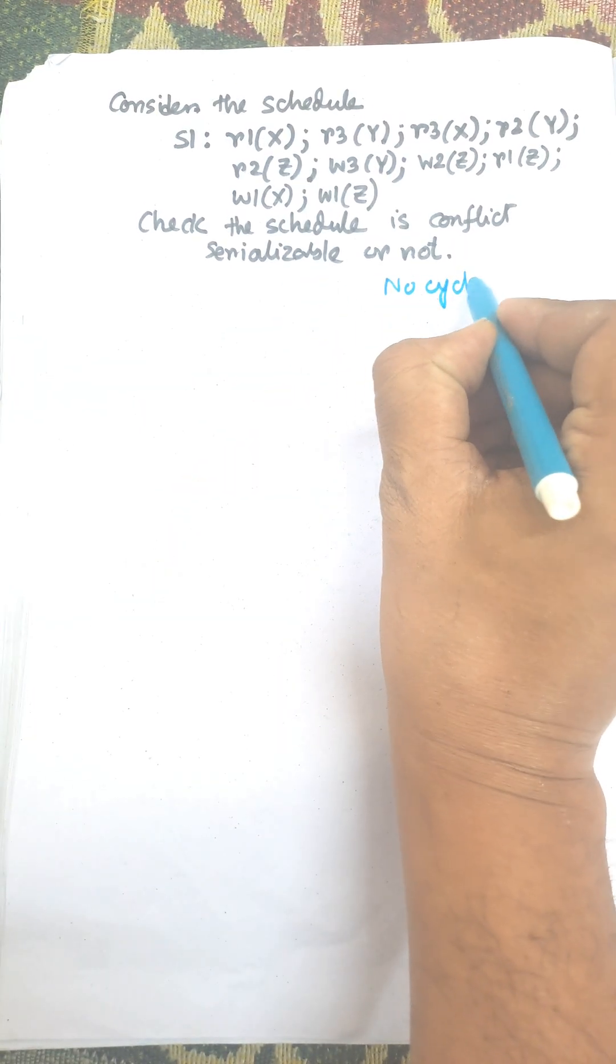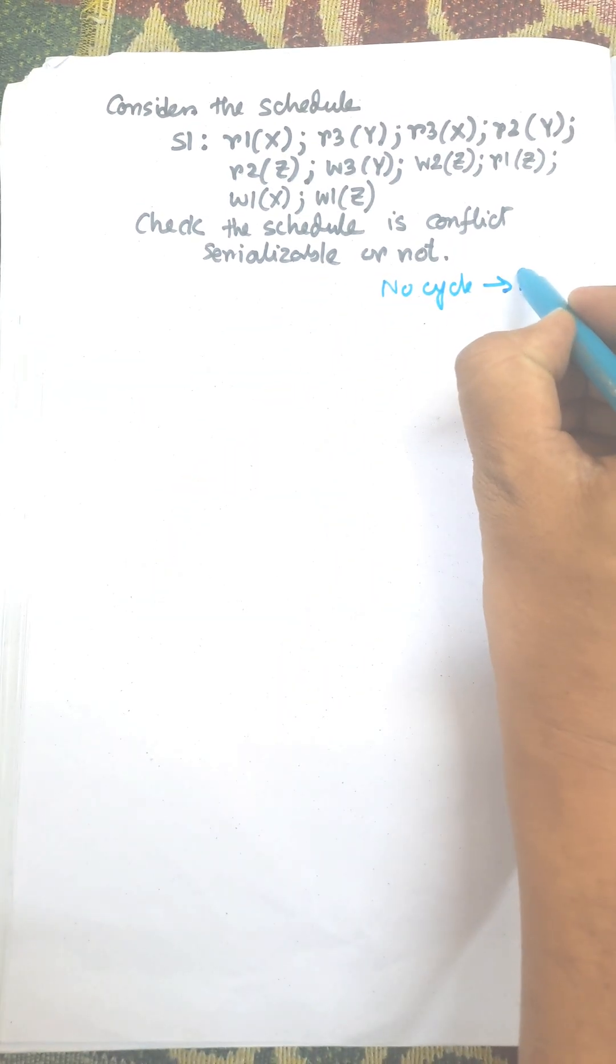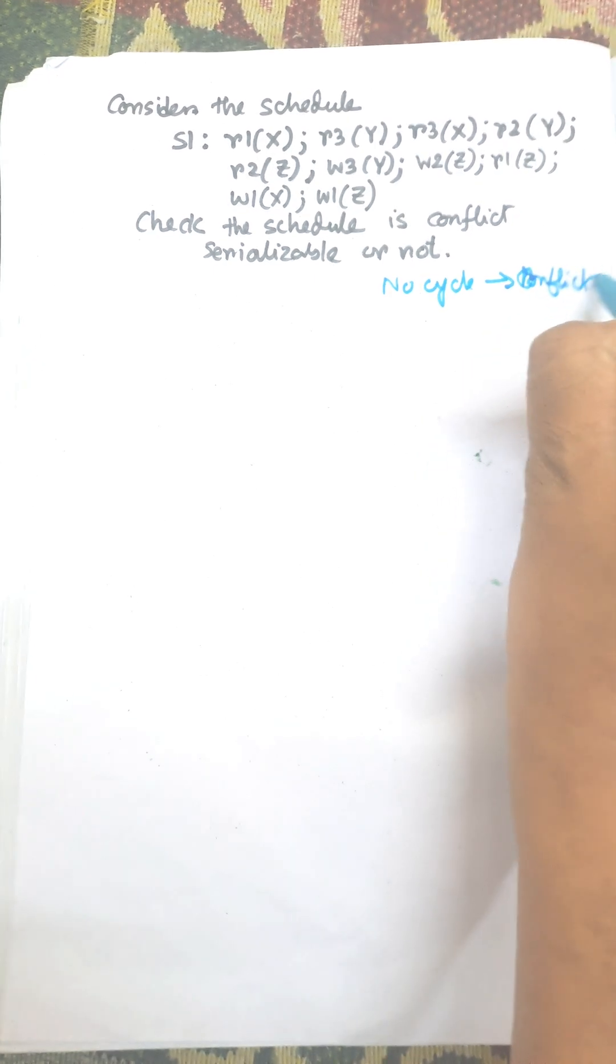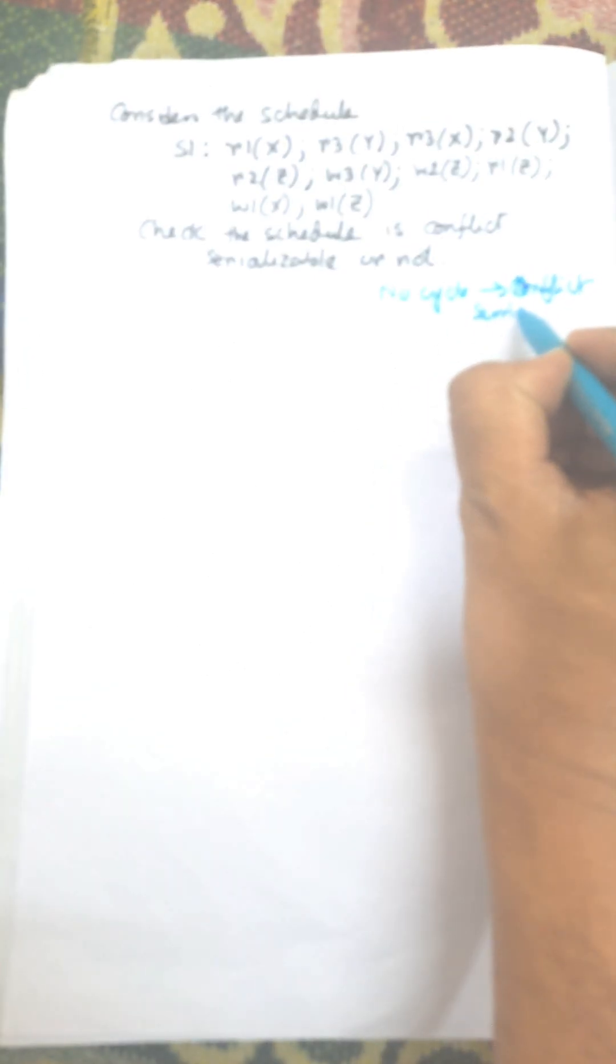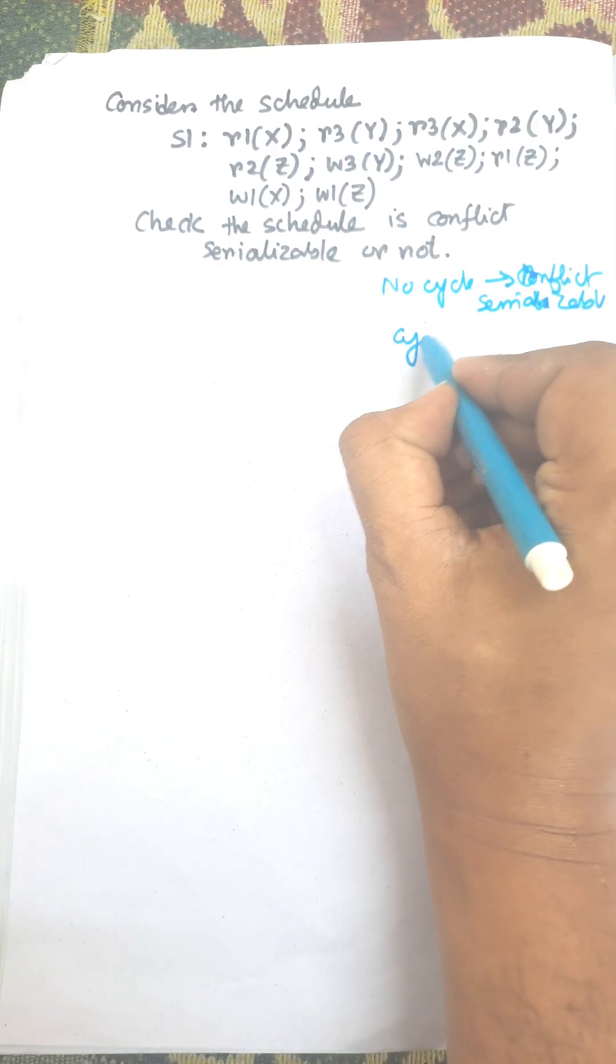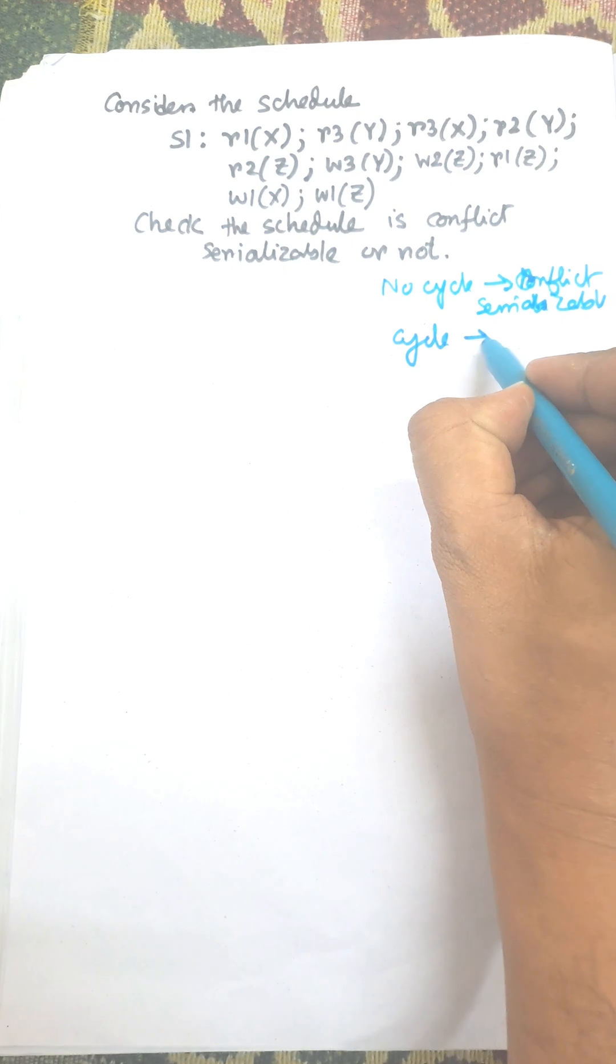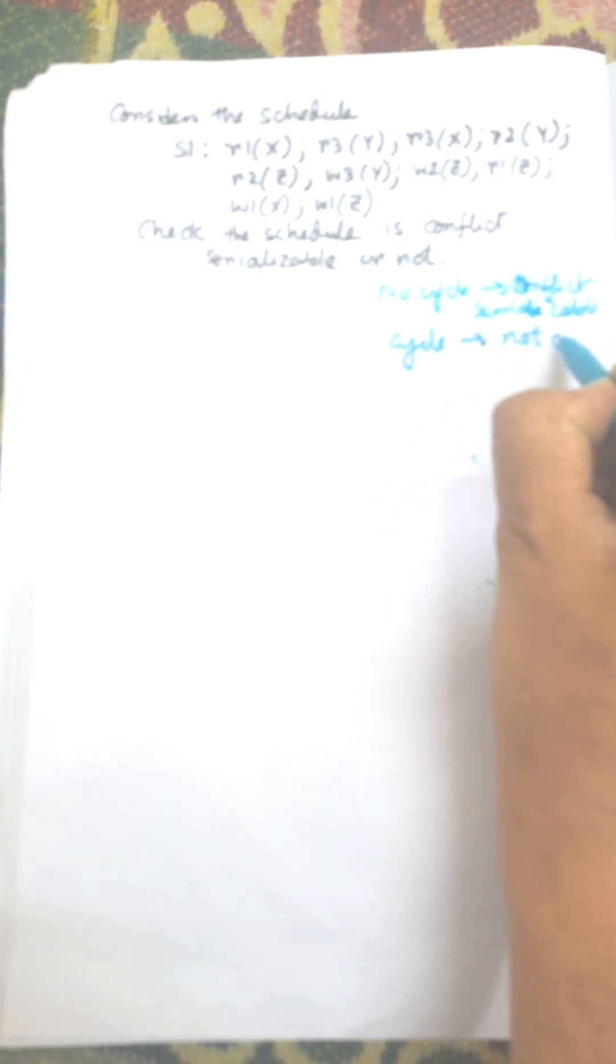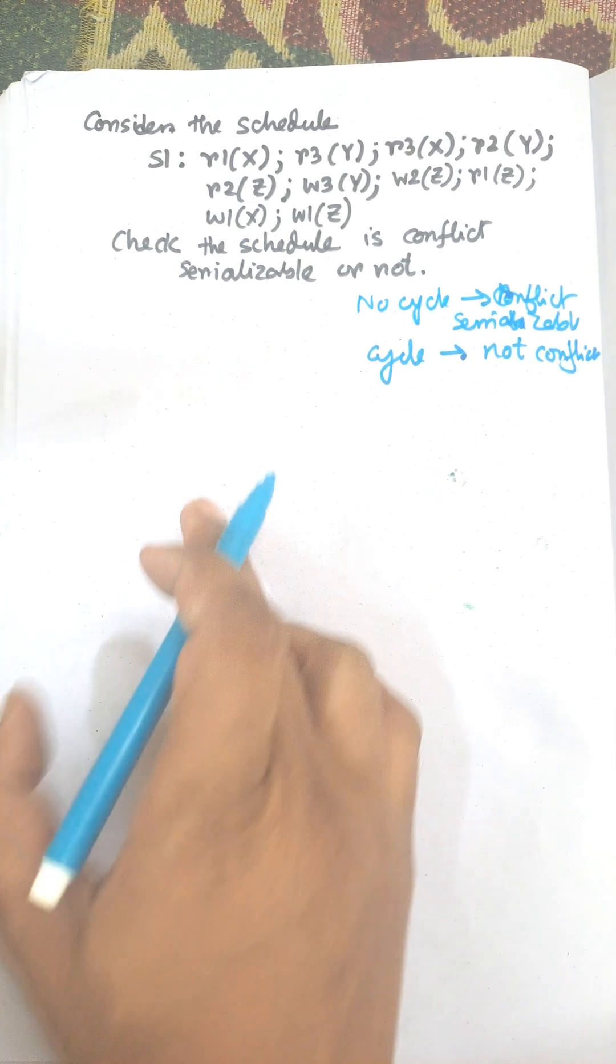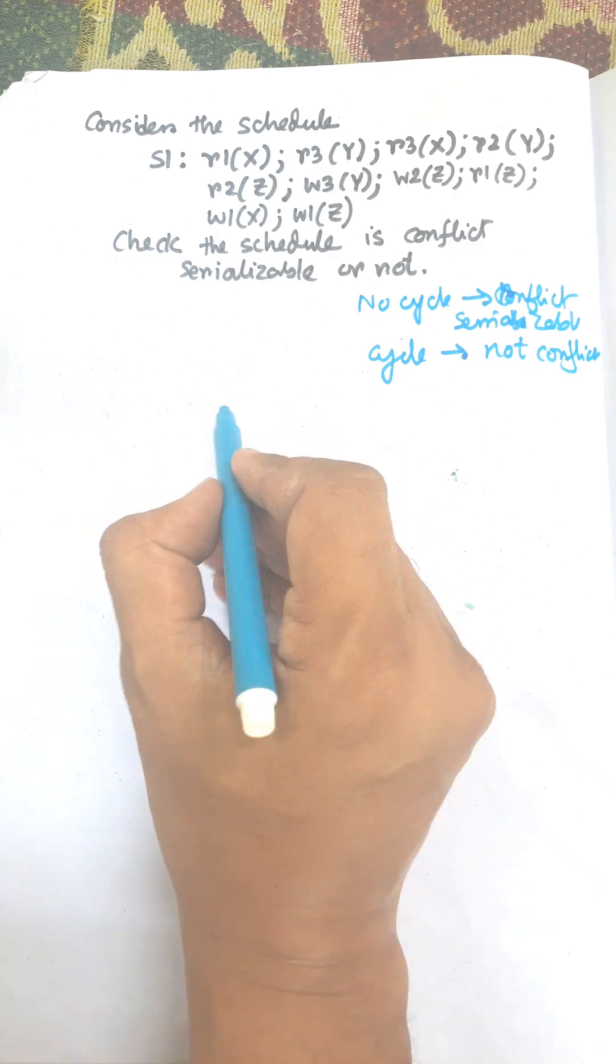Cycle means not conflict serializable. No cycle means conflict serializable. Cycle means not conflict serializable. Now we need to construct the precedence graph first.